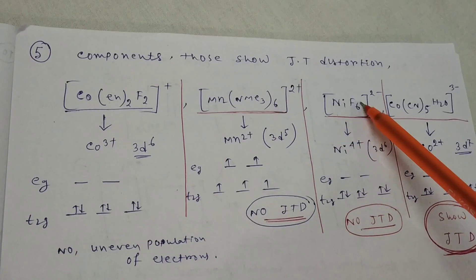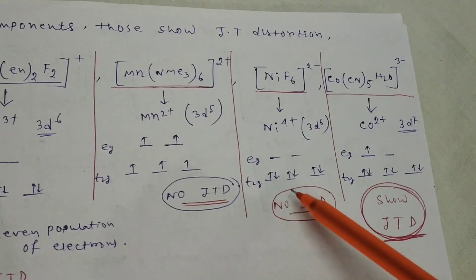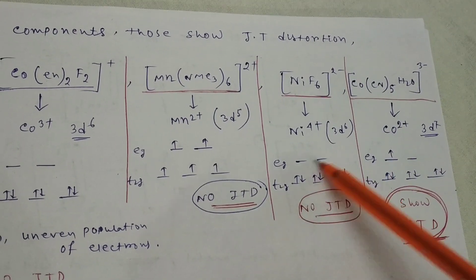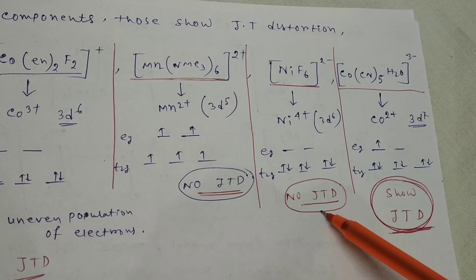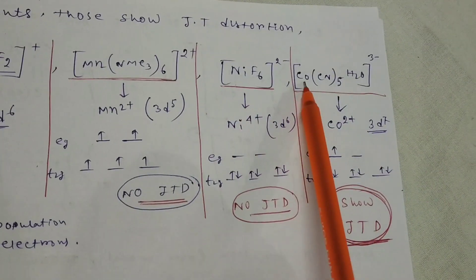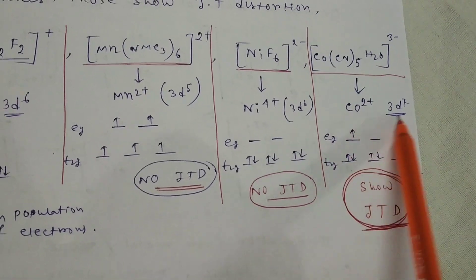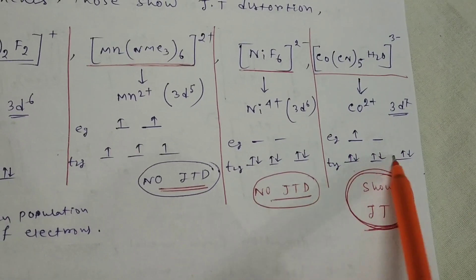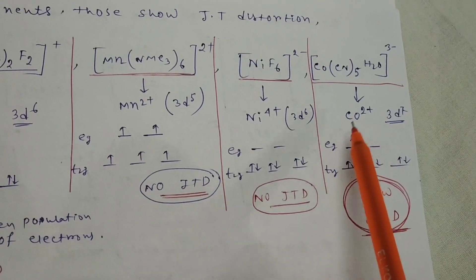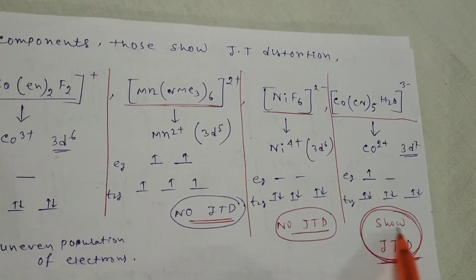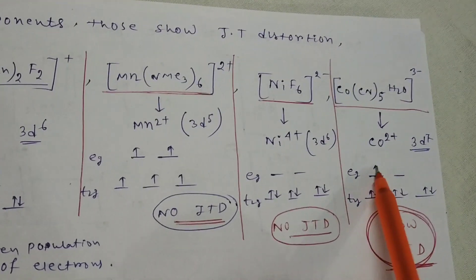For Co(CN)5(H2O)^3-, cobalt is 2+ oxidation state, d7 system. In eg and t2g, you can see one unpaired electron is present. That means Jahn-Teller distortion is present because of uneven population in eg level.